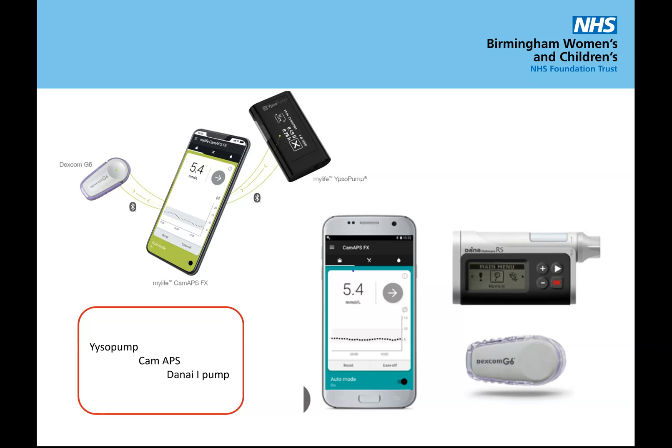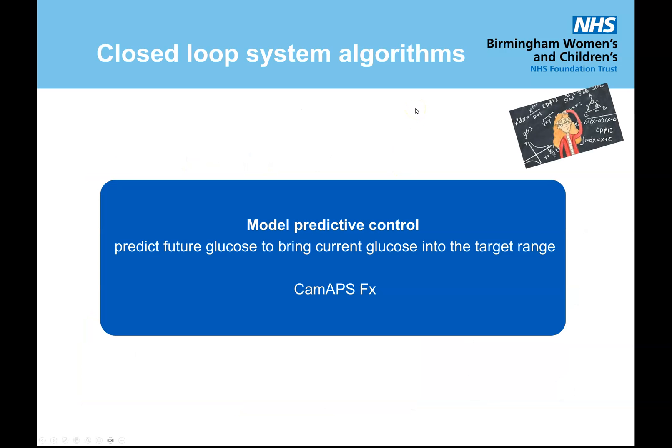CAMAPS is available with either the Ipsomed or the Dana pump, and it will vary depending on what's available within your healthcare system. You can get pre-filled cartridges with the Ipsomed, which is not possible with the Dana. It works on a model predictive control algorithm and is without doubt the cleverest algorithm — it takes in more variables including insulin on board, carbs on board, sensor glucose trend, insulin sensitivity, and others. The personal glucose target is adjustable from 4.4 to 11, with different time segments, offering a lot of opportunity to mold this to the person in front of you.